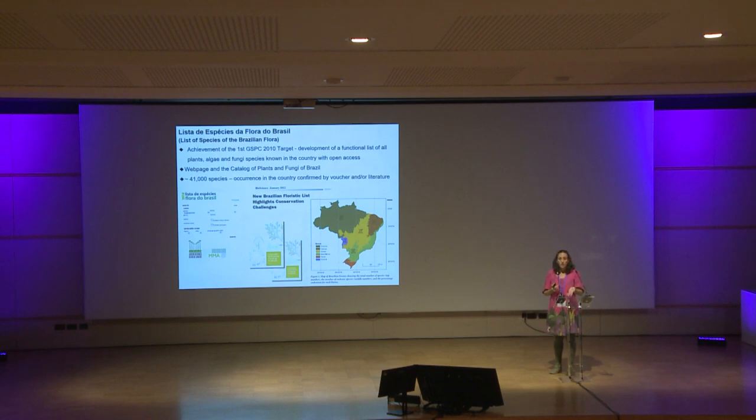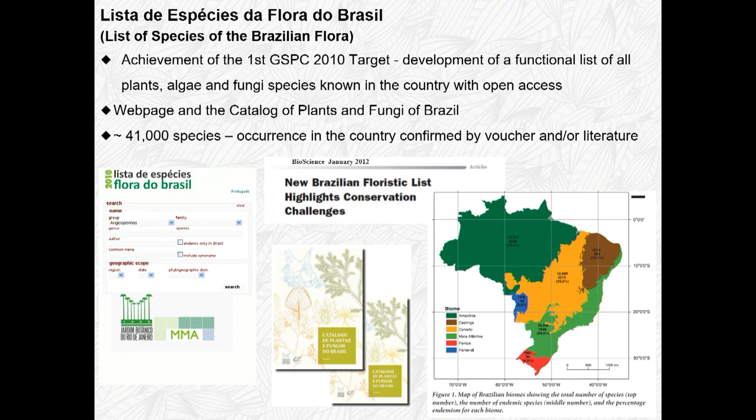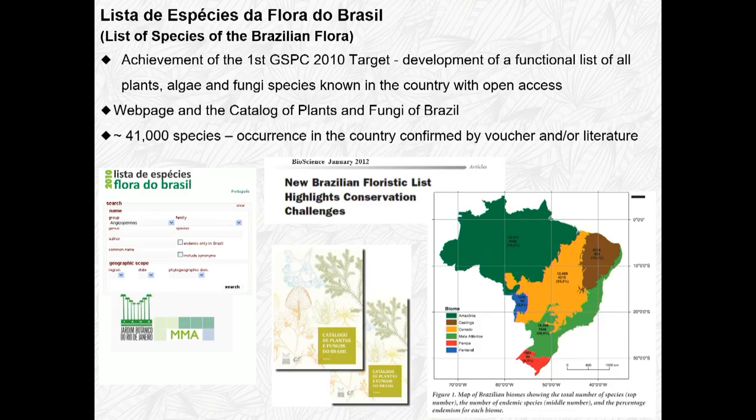We achieved the first target. Every objective in the GSPC had targets, and the first target was making a list — we achieved this in 2010. We developed this functional list and published it on a web page and a physical catalogue, gigantic as it was. We had a very nice platform with more than 41,000 species with occurrence confirmed to the country, either by a voucher, a herbarium specimen, or literature citing it to Brazil. We also had an article with a summary of all the information.